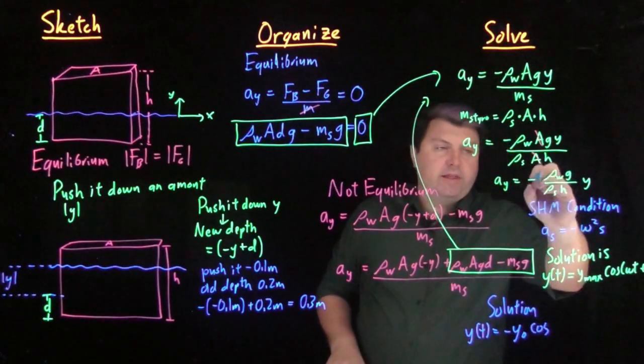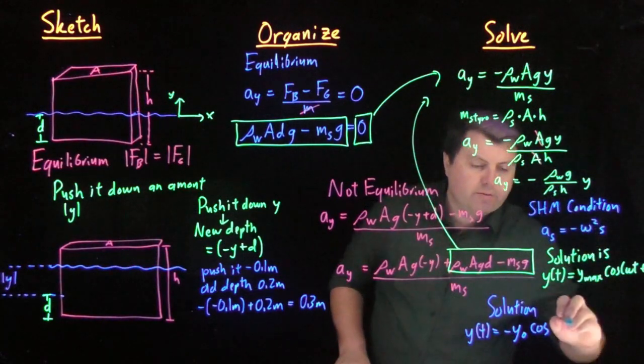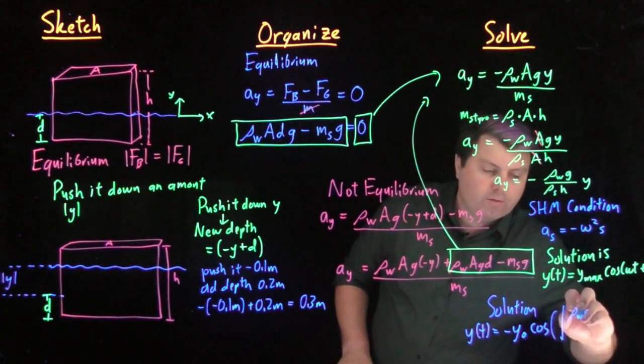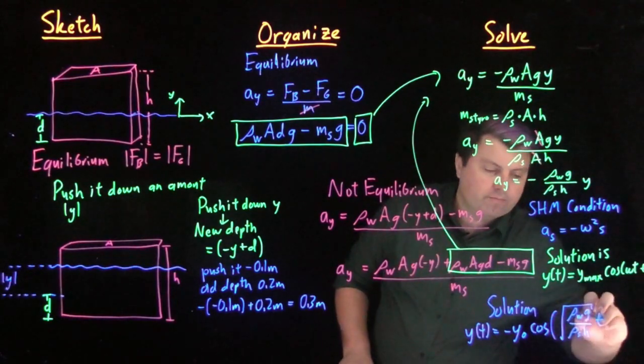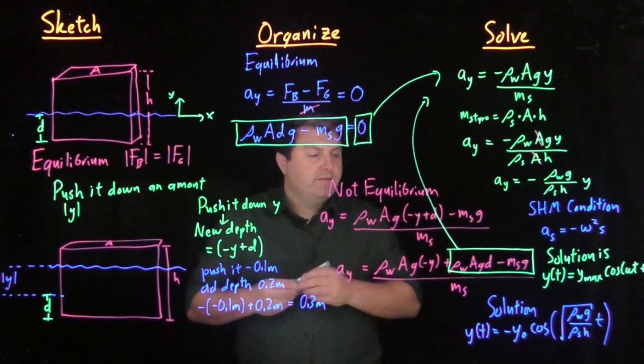Cosine, and then all of this is my omega. But this is squared, omega squared, so I have the square root of ρ of the water g over ρ of the styrofoam h times time. And I already put this negative sign to indicate the phase.